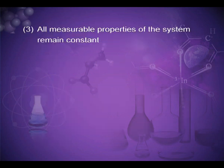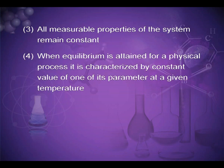Third point: all measurable properties of the system remain constant. Fourth, when equilibrium is attained for a physical process, it is characterized by a constant value of one of its parameters at a given temperature.